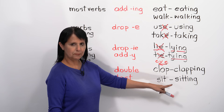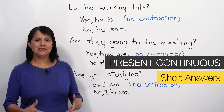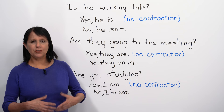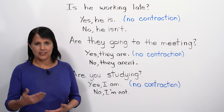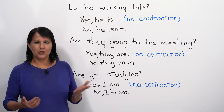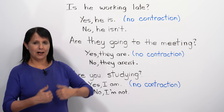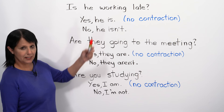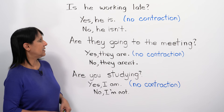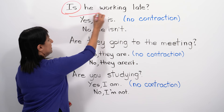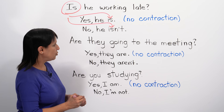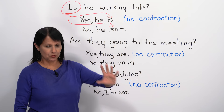Now let's look at how to give short answers in the present continuous tense. In English, if someone asks a yes/no question, we usually say a little more than just yes or no, but we don't have to repeat everything. For example, if someone says 'Is he working late?' you can simply say 'Yes, he is' or 'No, he isn't.' Notice: in a positive short answer, you cannot use a contraction — you can't say 'Yes, he's.' In the negative, you can use the contraction.